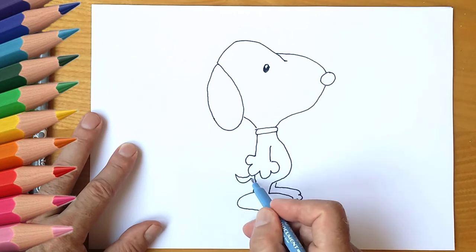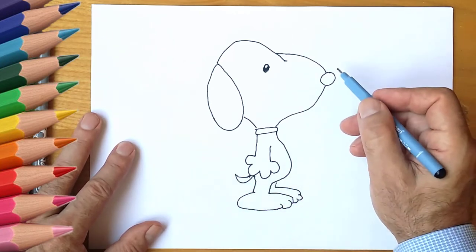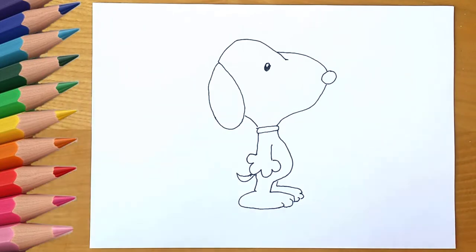And of course, draw a tail. Now draw the nose and ear. And we draw a collar.